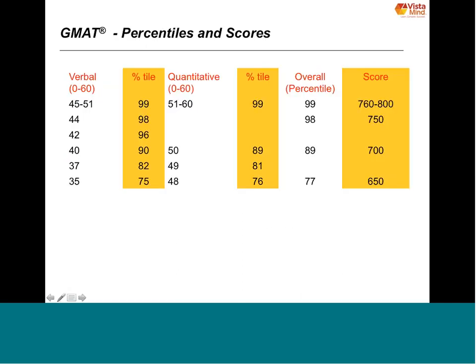Understanding the 37 questions in quant and 41 in verbal is of very huge importance as we go along preparing for this exam. Here is what you need to understand about raw scores and percentiles. In quantitative ability, if you get a raw score of 51 to 60, your percentile will be 99. But if you get 50, you're talking about 89 percentile — showing that a lot of people get 50 plus. Indians perform very well on the GMAT, with a mean score higher than many countries including the US.